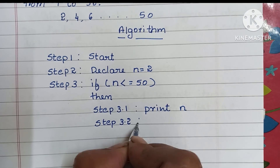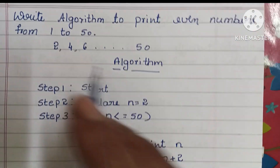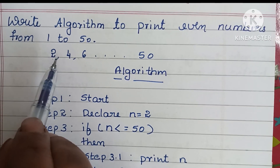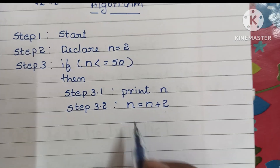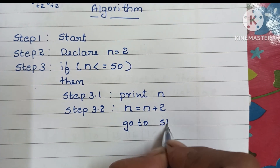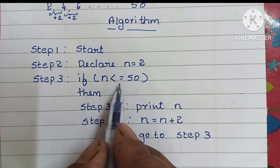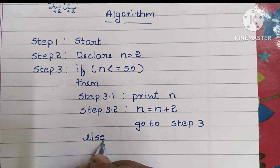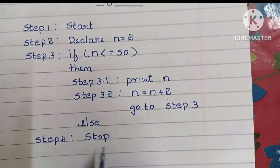Step 3.2: we increase n by 2 — that is, n is equal to n plus 2. Each time n increases by 2: 2 plus 2 is 4, 4 plus 2 is 6, and so on. Then we go back to step 3 and check the condition again. If the condition is false — that is, n is greater than 50 — we go to step 4 and stop the algorithm using the stop statement.